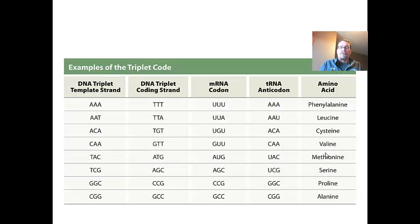There is a triplet code for the 20 amino acids that are read off from the mRNA to the tRNA.